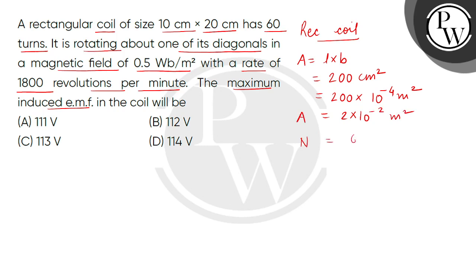Now children, the number of turns is given as 60. It rotates about a diagonal in a constant magnetic field with a value of 0.5 Wb/m². Now children, the frequency is given per minute, so we will convert it to per second. We will divide by 60, so it will come to 30 Hz. That is 30 revolutions per second.